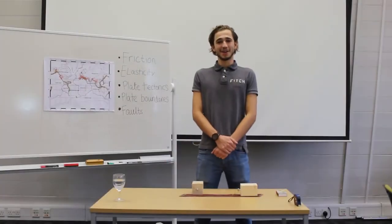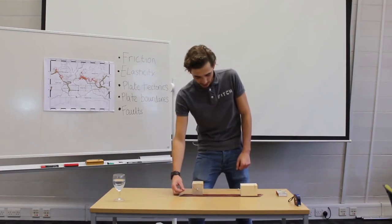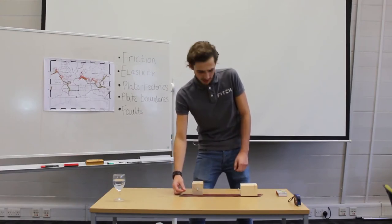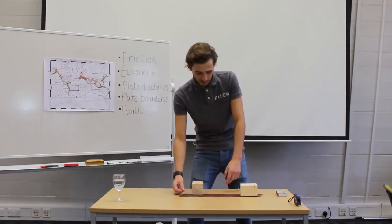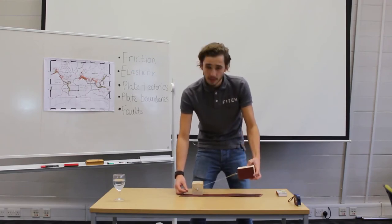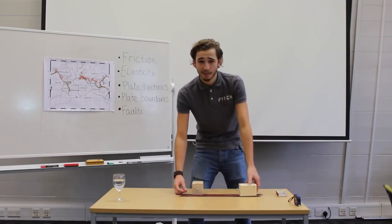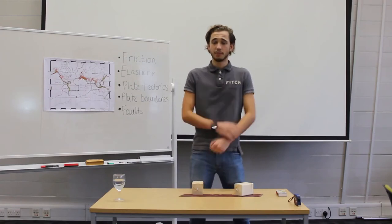Welcome back. Let's see how you got on. So as you pull smoothly and steadily on the string, you may have noticed that the block doesn't initially move, although the elastic band stretches. This is because the complex and irregular surface of the sandpaper and the sanding belt are locked together, preventing the block from moving.